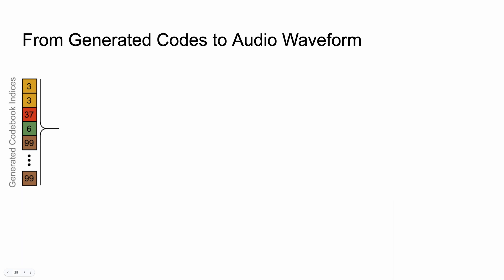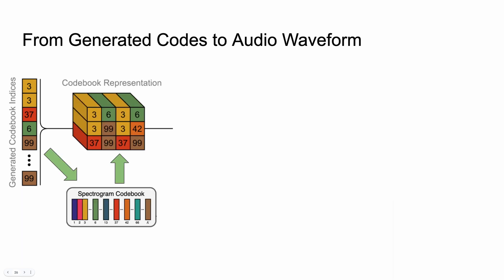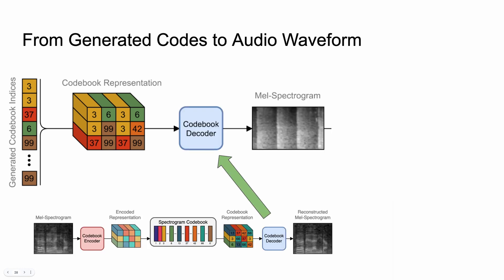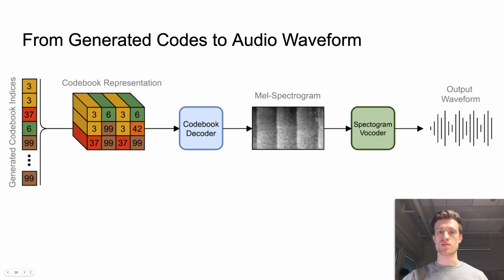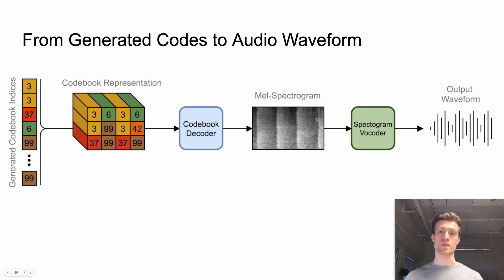What happens during test time? After we finish sampling the codes, we look up the codebook with sampled indices. By doing so, we will obtain the quantized representation that can be decoded into a spectrogram. Finally, we want to generate the waveform from the spectrogram with a vocoder.